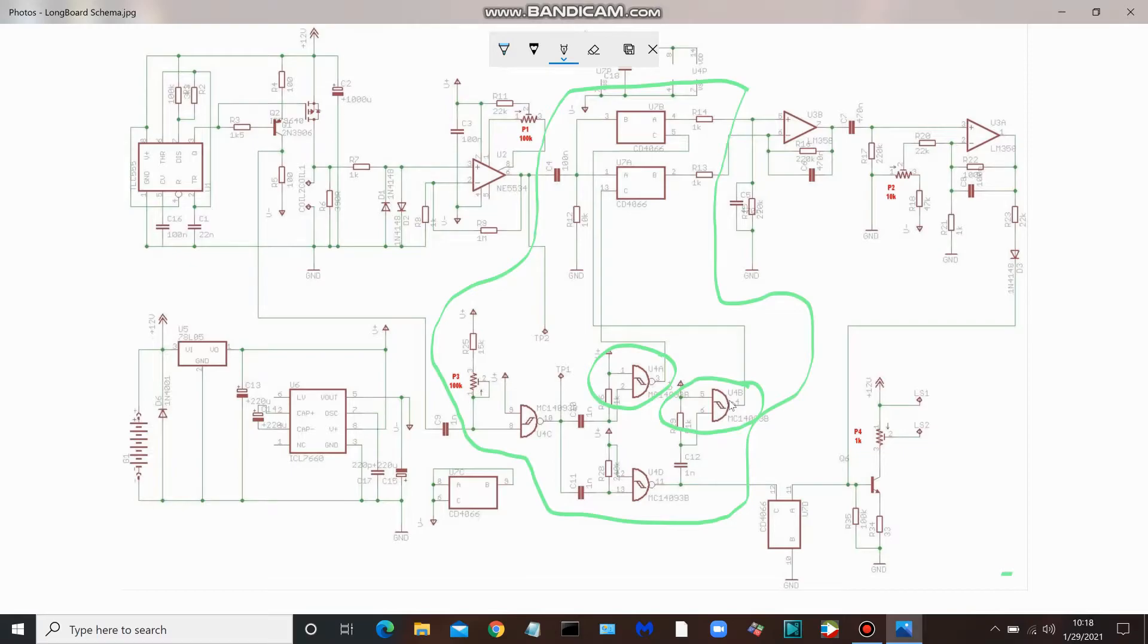U4C, which we looked at with part of the pot, that's the main sample delay, and U4D is the secondary sample pulse delay. So A and B, those are the ones that come up here to these two parts of the CD 4066.